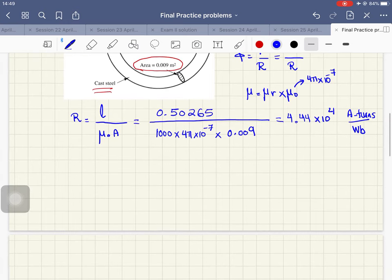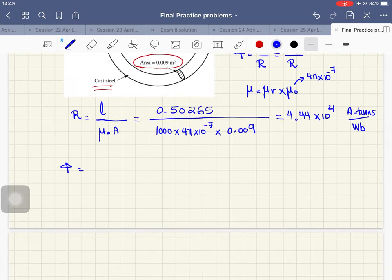And this will give us 4.44 multiplied by 10 to the 4 amp turns per Weber. Now that I have the reluctance, I can substitute in this equation.